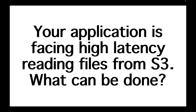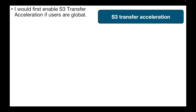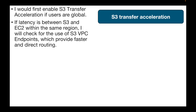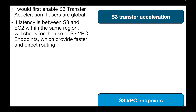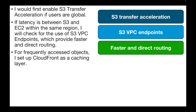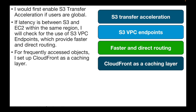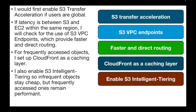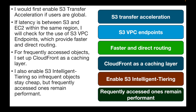The next question is: your application is facing high latency reading files from S3. What can be done? First, enable S3 Transfer Acceleration if users are global. If the latency is between S3 and EC2 within the same region, check for the use of S3 VPC endpoints, which provides faster and direct routing. For frequently accessed objects, set up CloudFront as a caching layer, and enable S3 Intelligent-Tiering so infrequent objects stay cheap while frequently accessed objects remain performant.